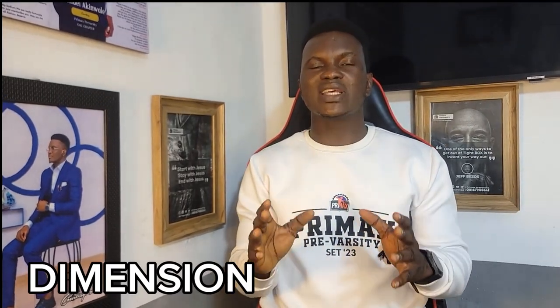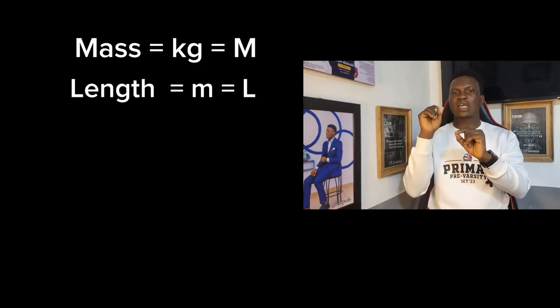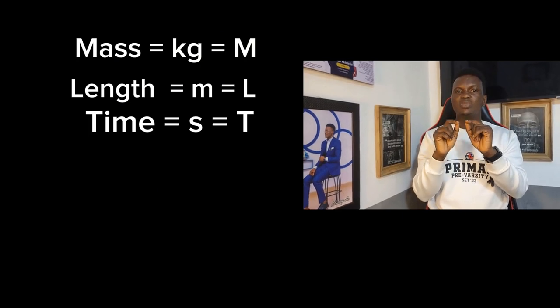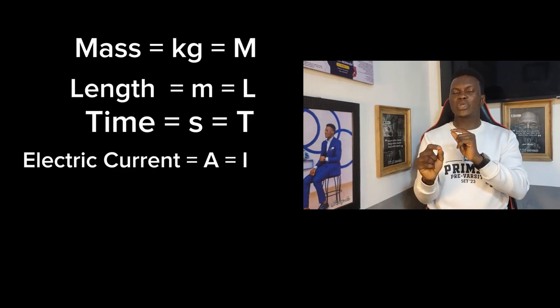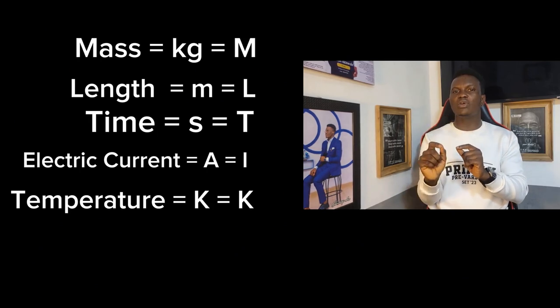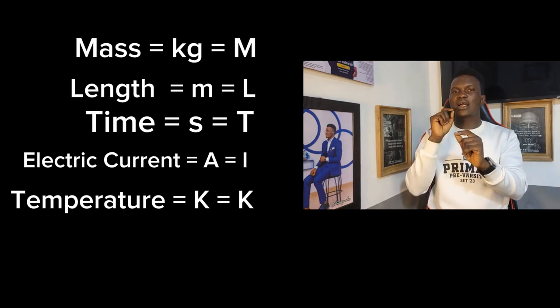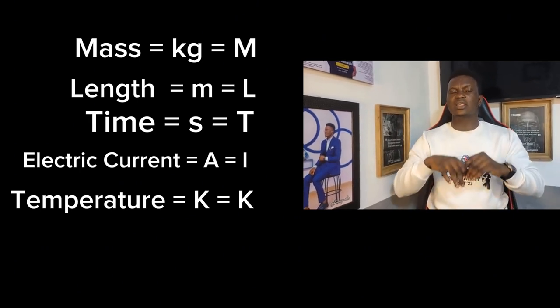Dimension is defined as the representation of physical quantities in their basic form. Mass is represented by M, length by L, time by T, electric current by I or A, and temperature by θ or K. Dimension is important — it can help us verify if a formula is correct through homogeneity of dimensions.